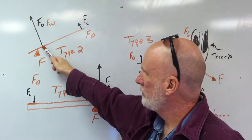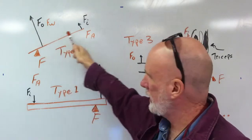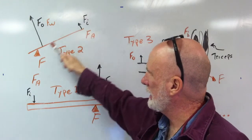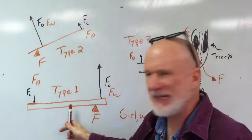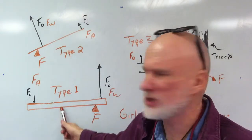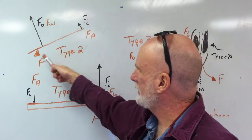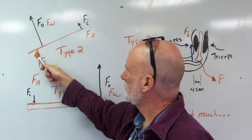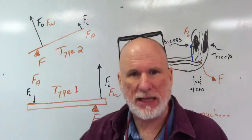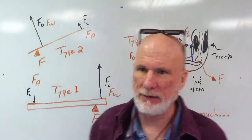Type two, the load is between FI and the fulcrum. The load is between FI and fulcrum. It's like a seesaw. Type one is like a seesaw. Type two is like, I don't know, I want to move a car or something.